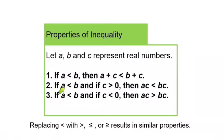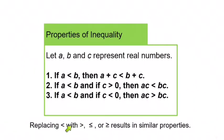Also, if A is less than B and C is positive, then we can multiply both sides by C and the inequality will still be true. If A is less than B and C is negative, then when we multiply both sides by C, we have to remember to flip the inequality symbol. These same statements are true no matter what inequality symbol we have — we can add the same thing to both sides, multiply by a positive freely, or multiply by a negative if we flip the symbol.